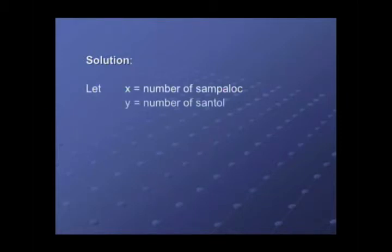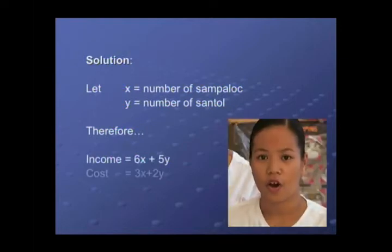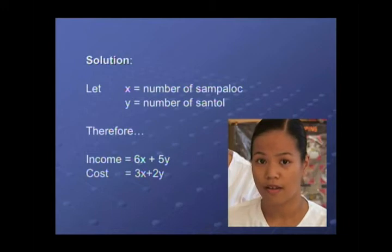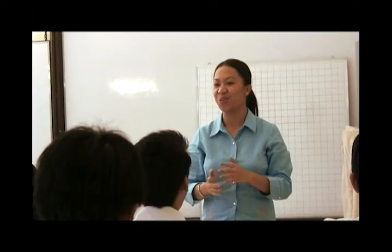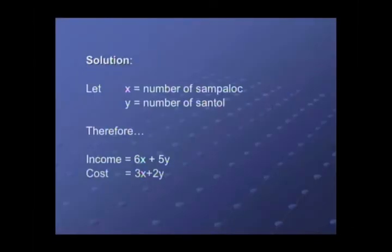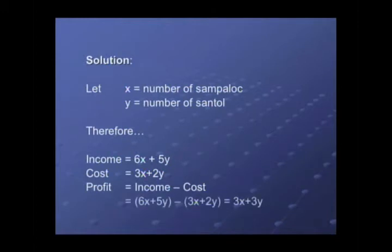Since the Sampaloc will sell for 6 pesos each and the Santol will sell for 5 pesos each, the income should be 6X plus 5Y, and the cost is 3X plus 2Y. The teacher confirms they're correct. If we have the income and the cost, what will be the profit? That will be income minus cost, so the profit will be 3X plus 3Y.